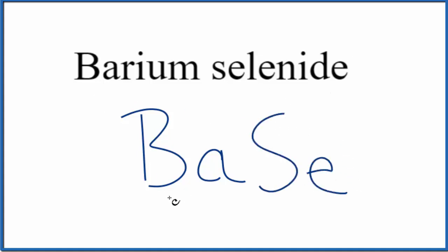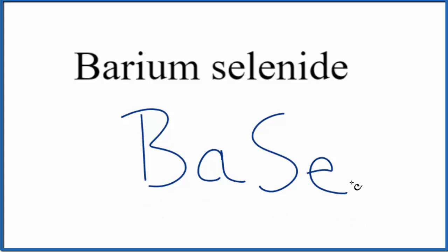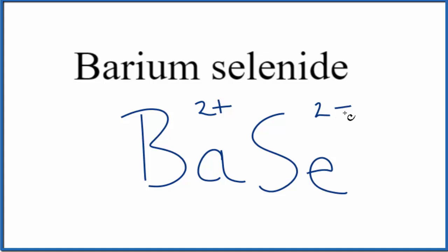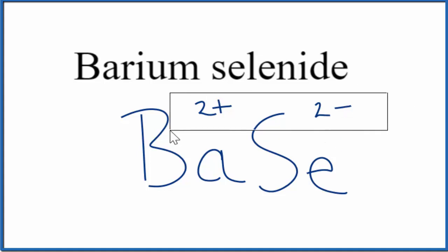Because barium is a metal and selenium is a non-metal, we consider this an ionic compound, so we have to think about the charge. Barium is in group 2, so that's always 2 plus, and selenium is always 2 minus. These charges balance out to give us a net charge of 0.